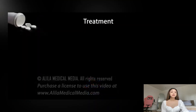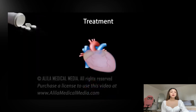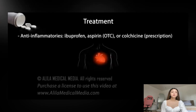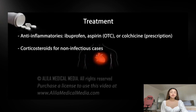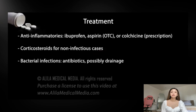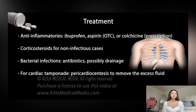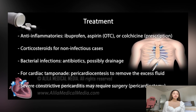Treatment depends on the cause and disease severity. Mild cases may get better on their own without treatment. Pain and inflammation can be relieved with anti-inflammatories. Corticosteroids may be used for non-infectious cases that do not respond to other medicines. Bacterial infections are treated with antibiotics and possibly drainage. If cardiac tamponade is present, a procedure called pericardiocentesis is performed to remove the excess fluid from the pericardial cavity. Severe constrictive pericarditis may require surgical removal of the pericardium as a last resort.